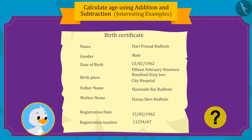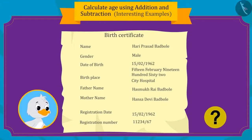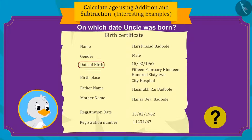Can you tell the date on which the uncle was born by looking at his birth certificate? Yes — uncle was born on February 15th, 1962.